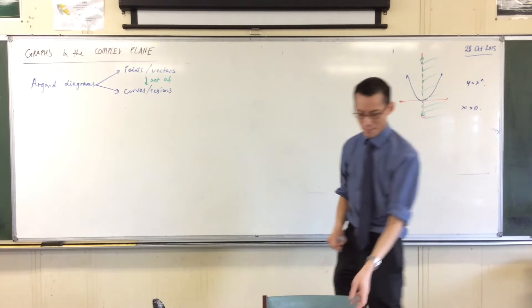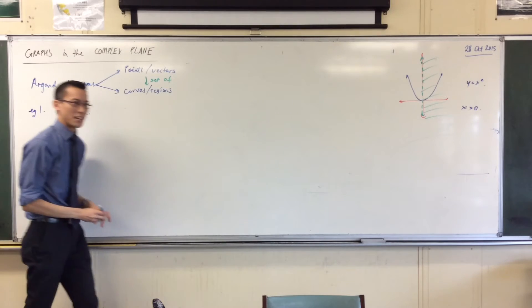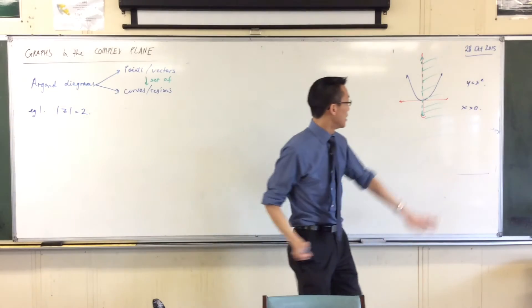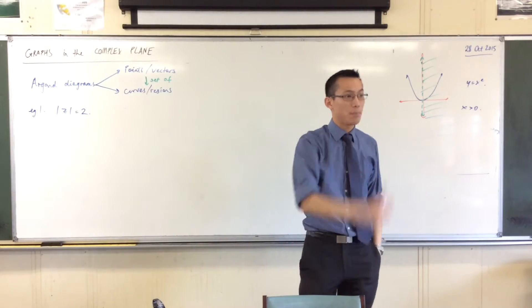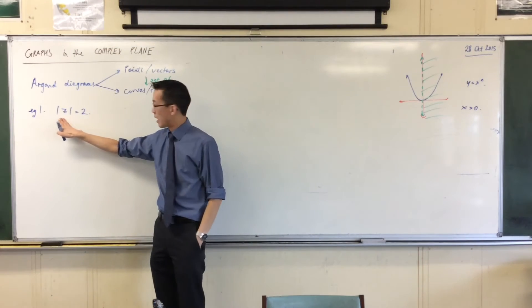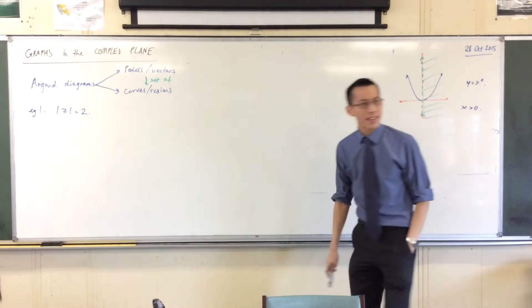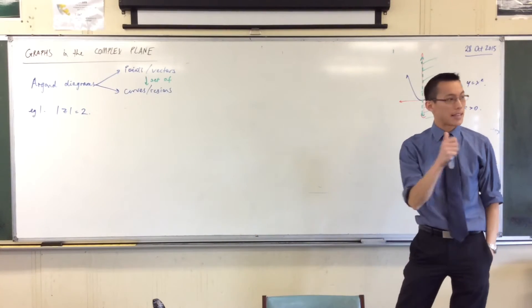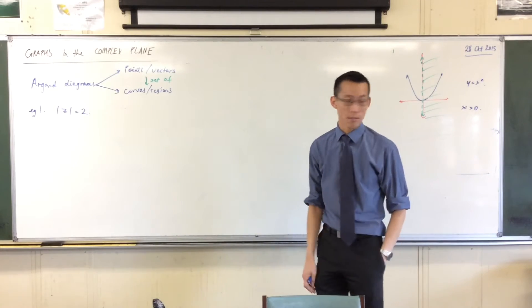So let's have a look at some really simple examples first. We'll begin right down the bottom of the ladder. So here, just like here, I'm not just giving you one complex number. I'm asking for all of the complex numbers that obey this property. Now we can think about this in a variety of ways. We can think about this algebraically. We can think about it geometrically. I'm going to do both.